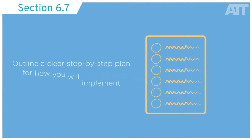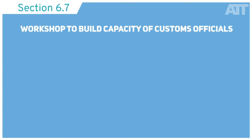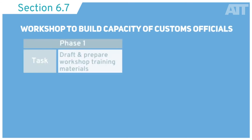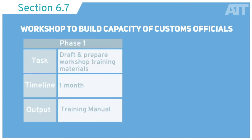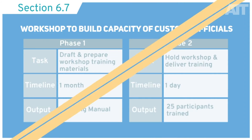In 6.7, you must outline a clear step-by-step plan for how you will implement the project. This section should be detailed enough to show that you've identified all the steps needed to complete the project. For example, if the project involves a workshop to build capacity of customs officials on ATT implementation, it might be broken up like this.